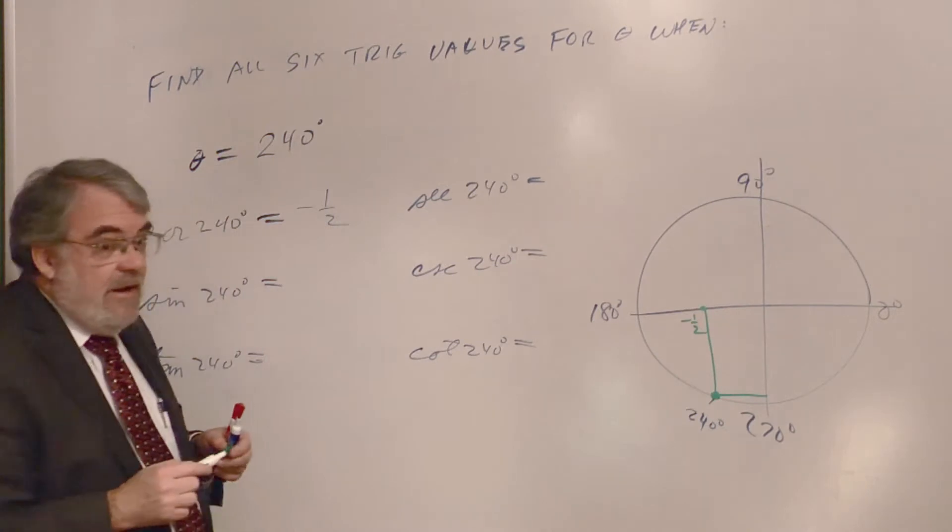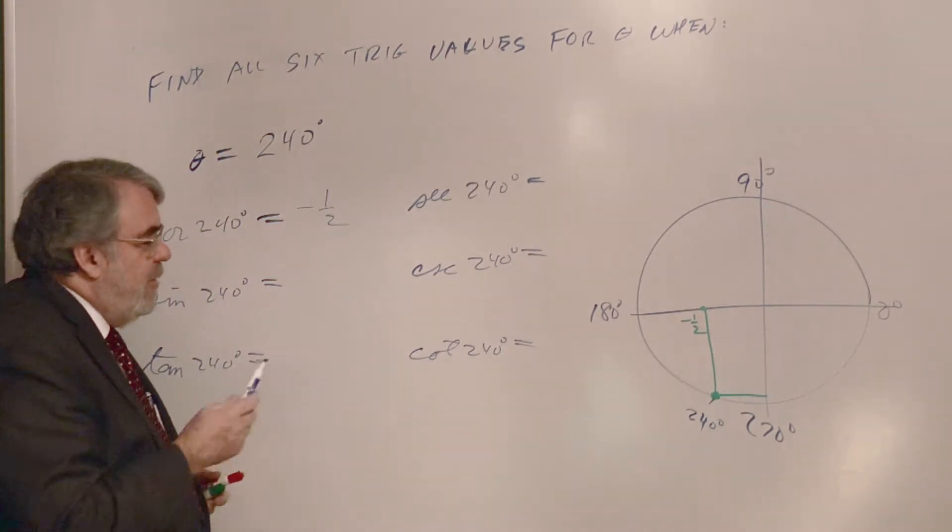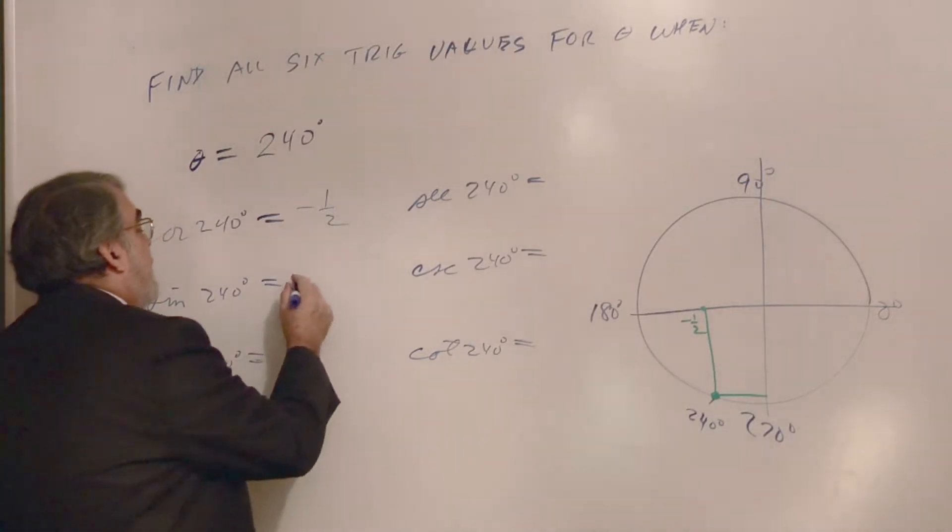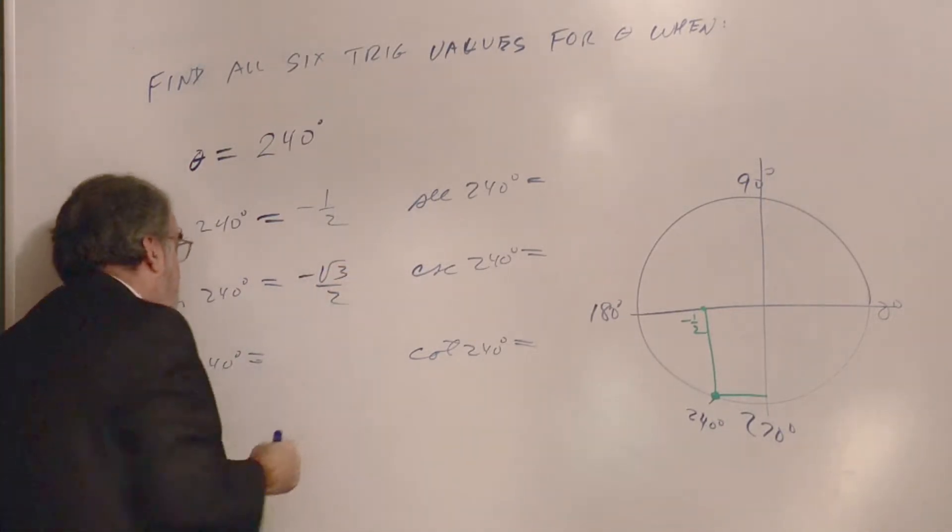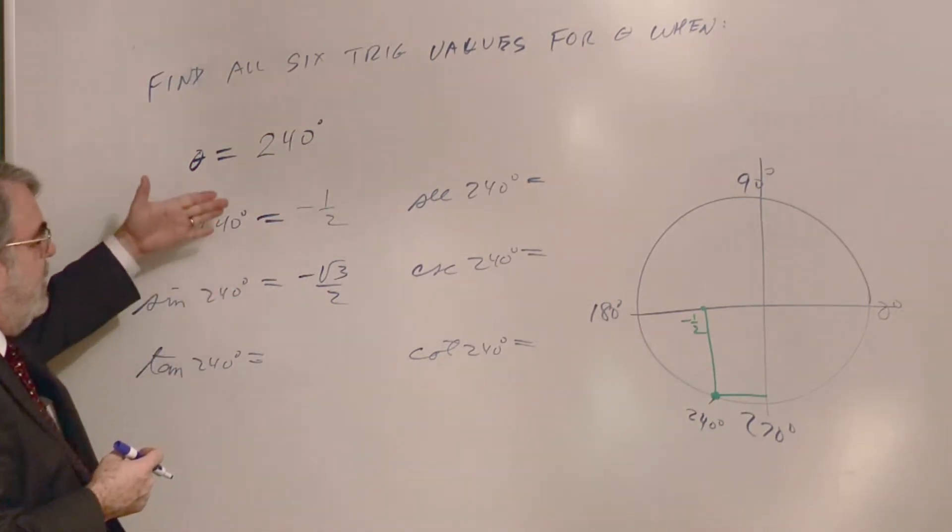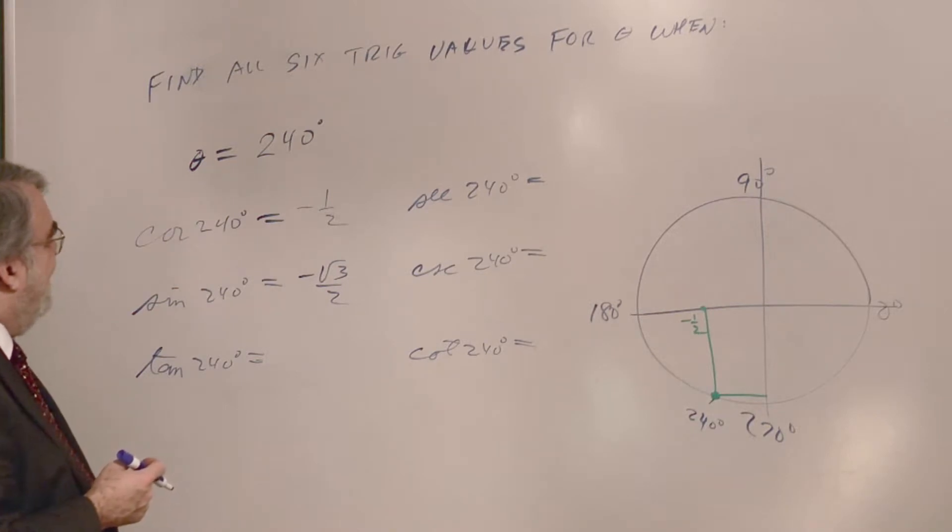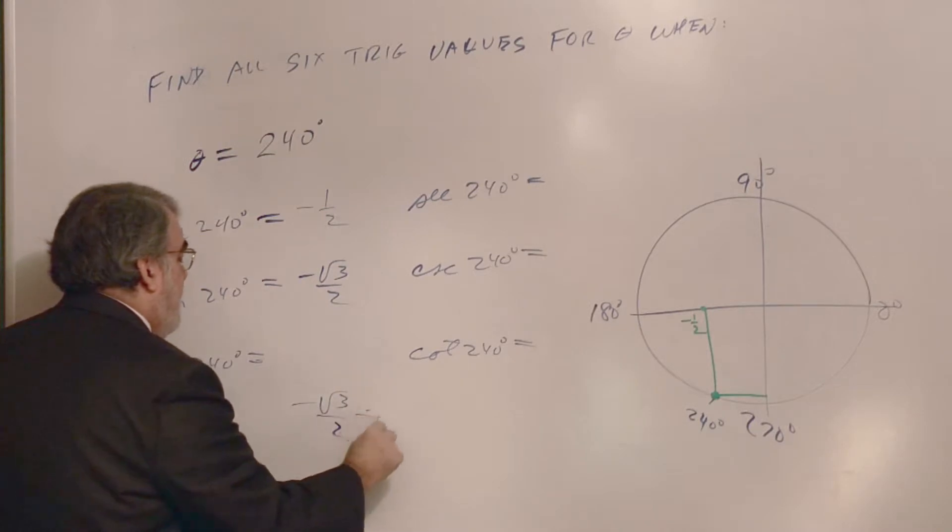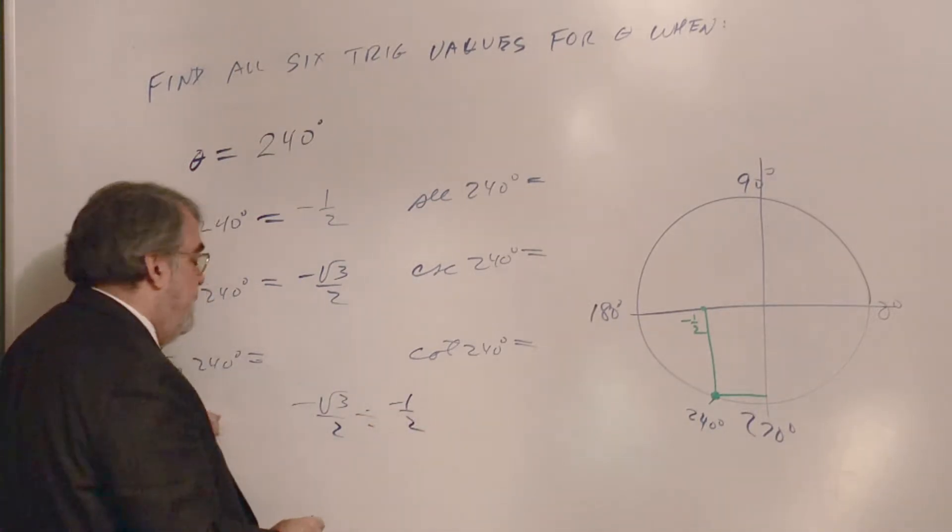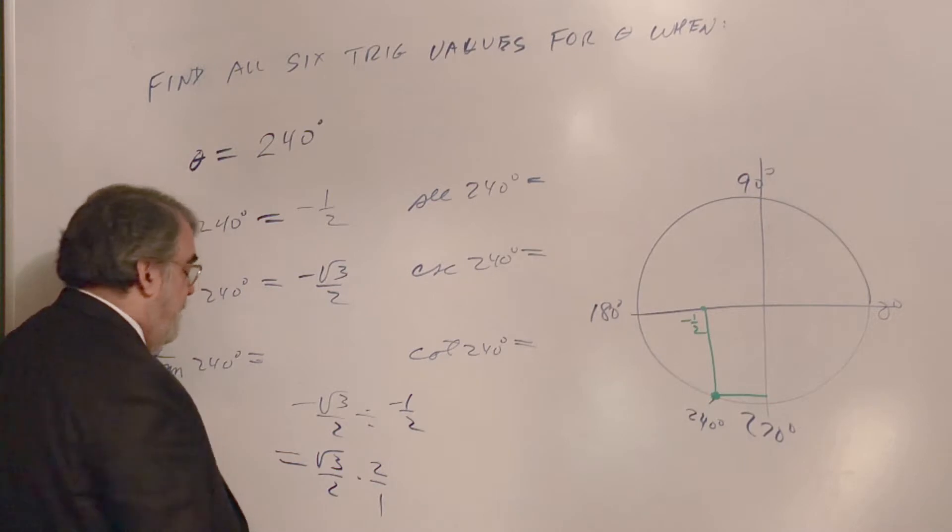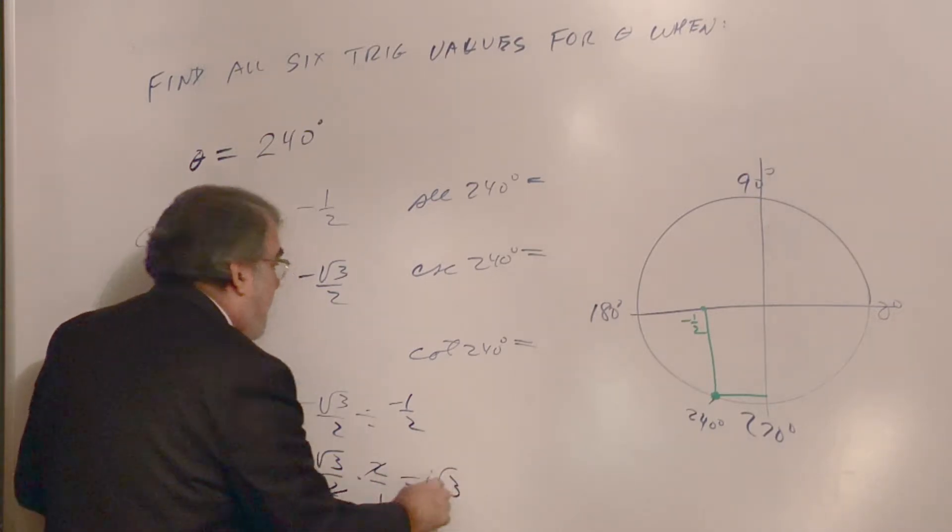The largest one is square root of 3 over 2. So we're going to call this minus square root of 3 over 2. And then tangent, oh boy, sine divided by cosine, that's minus square root of 3 over 2 divided by minus one-half. The two negatives cancel. And we invert and multiply, times 2 over 1. I get square root of 3.